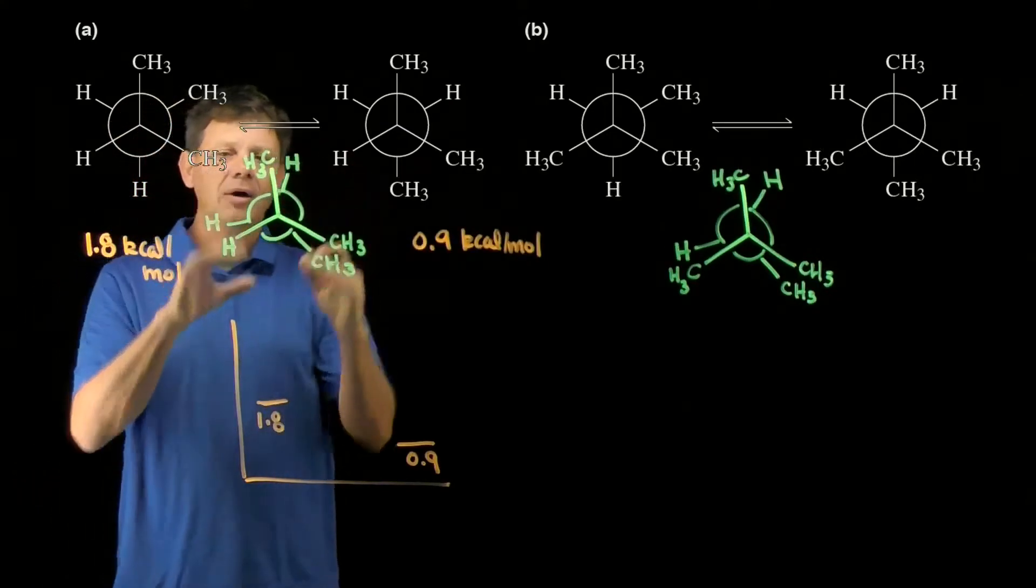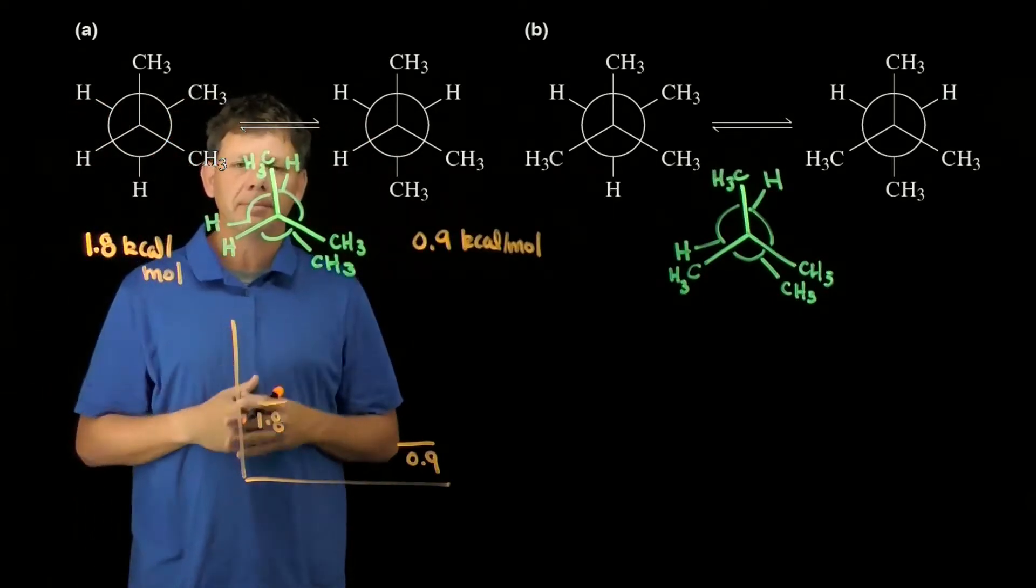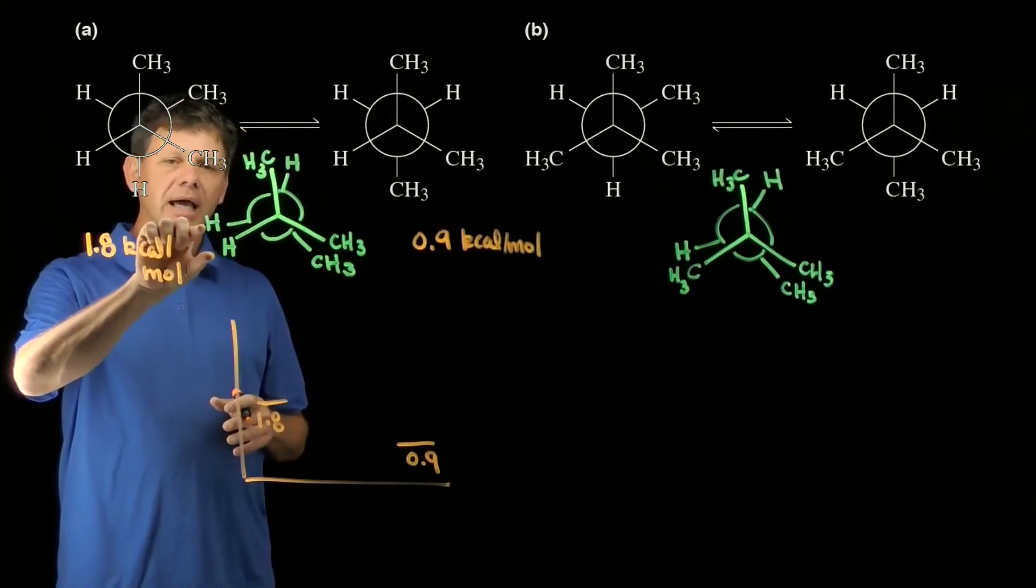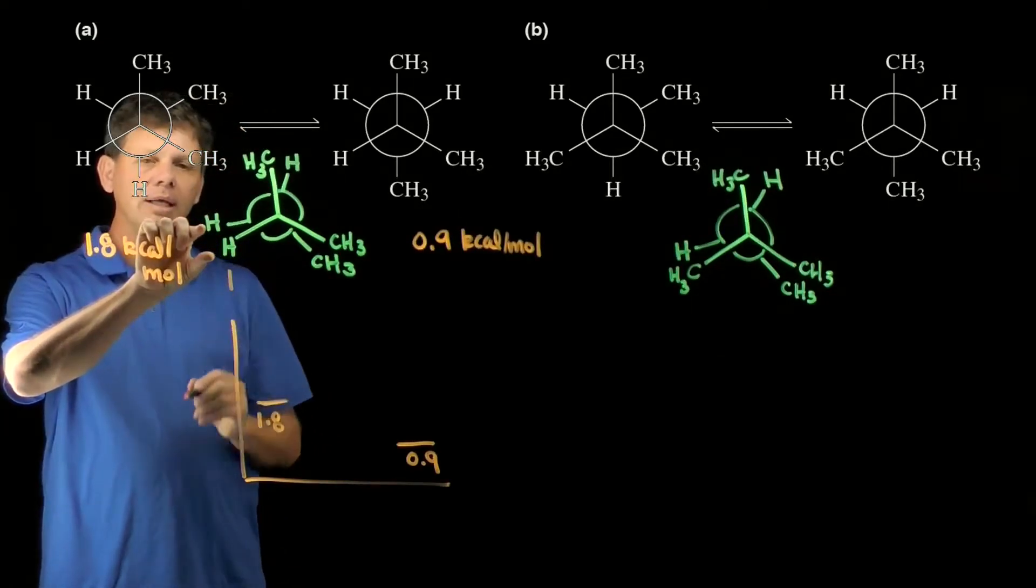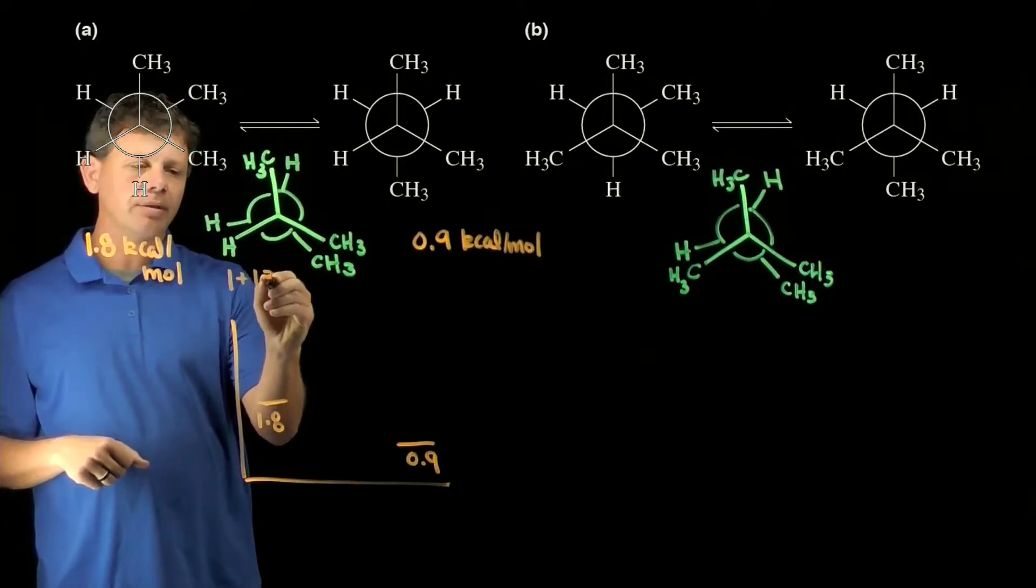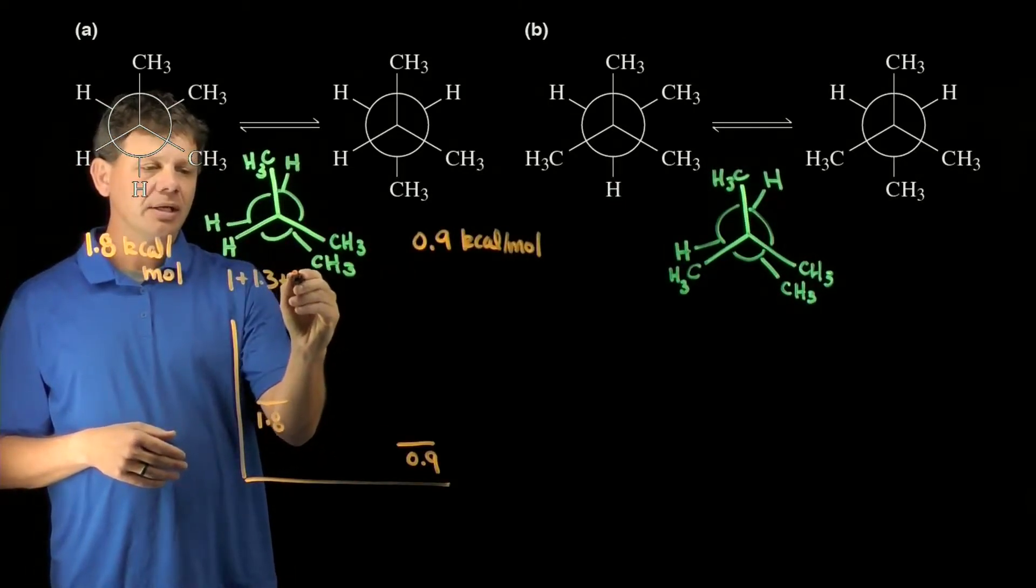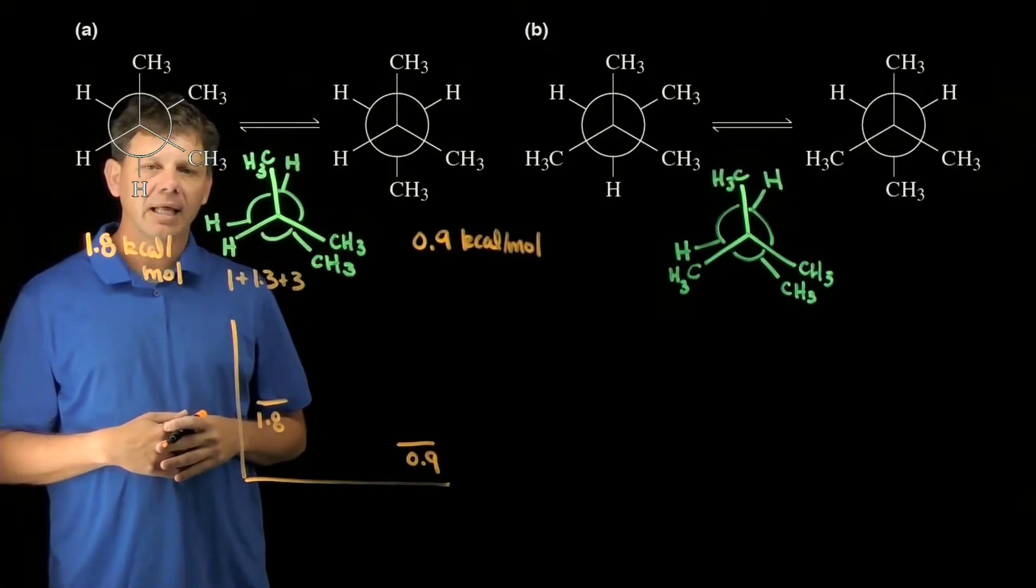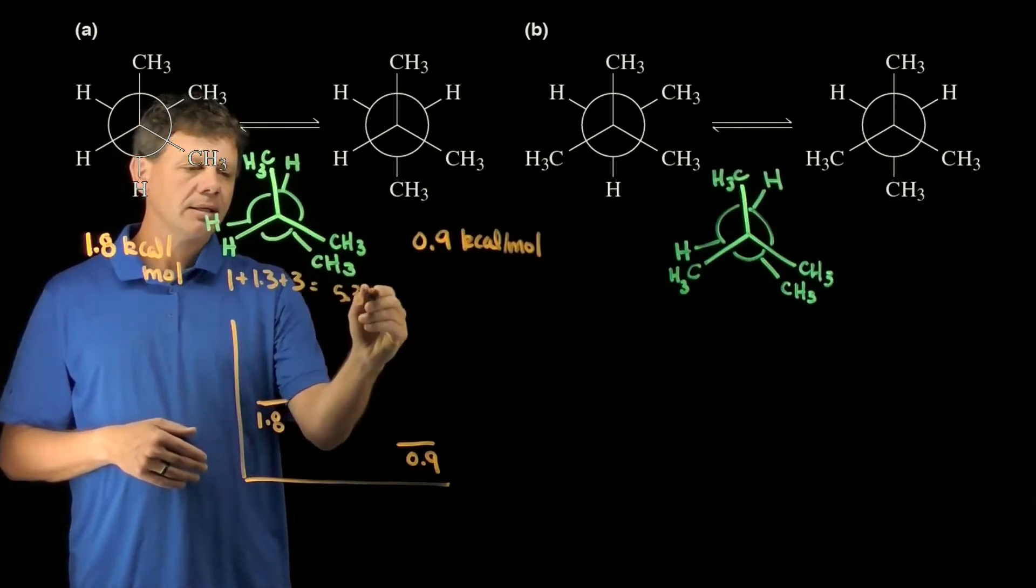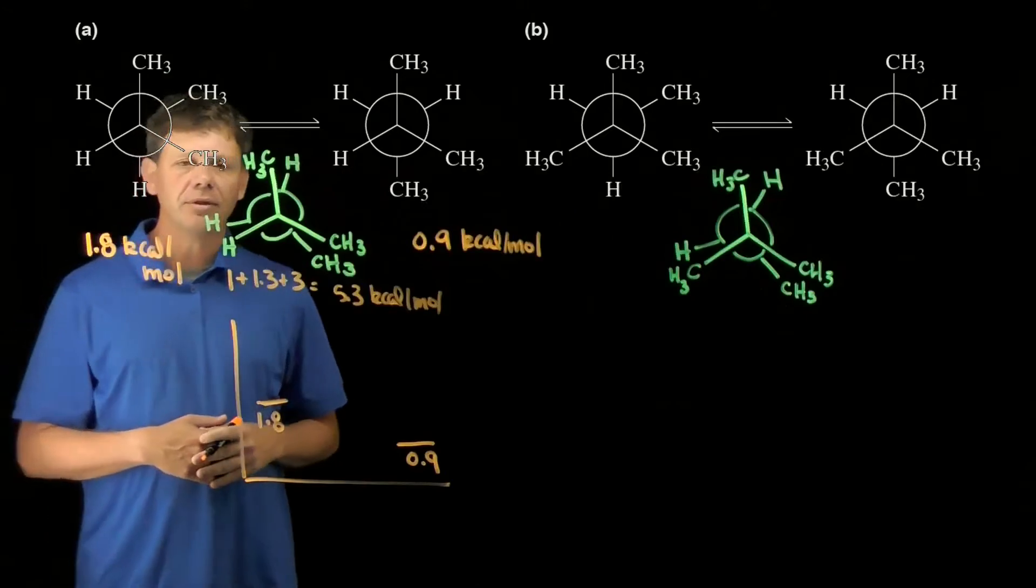We can do the same calculation for our eclipsed conformation. When we go from one staggered to another staggered, we're going to pass through eclipsed. The numbers that we're going to use here: a hydrogen-hydrogen eclipsing interaction is worth one kilocalorie, a methyl-hydrogen eclipsing interaction is around 1.3 kilocalories per mole, and a methyl-methyl eclipsing interaction is around three kilocalories per mole. That's going to give a total of 5.3 kilocalories per mole as the energy of the transition state.